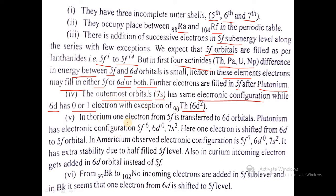There are exceptions: In thorium, 6d has 2 electrons. One electron from 5f is transferred to the 6d orbital. In plutonium, the configuration is 5f6 6d0 7s2. Here one electron is shifted from 6d to 5f orbital for stability.